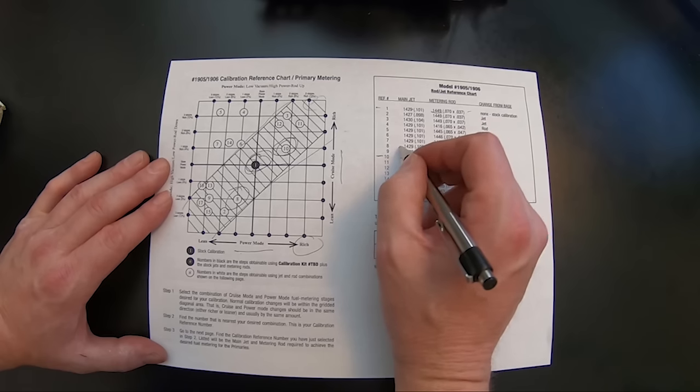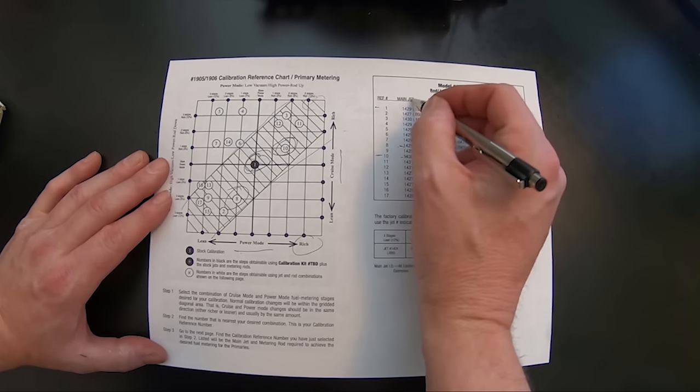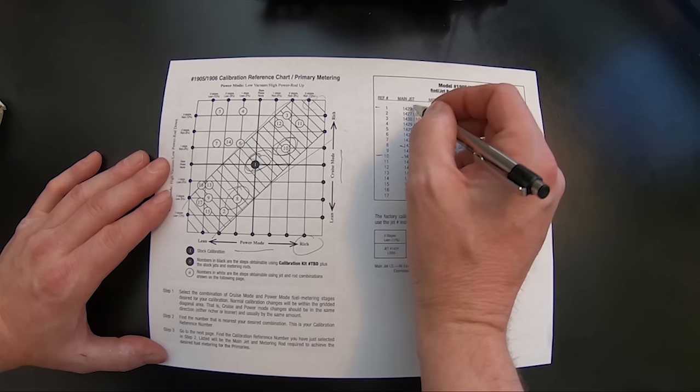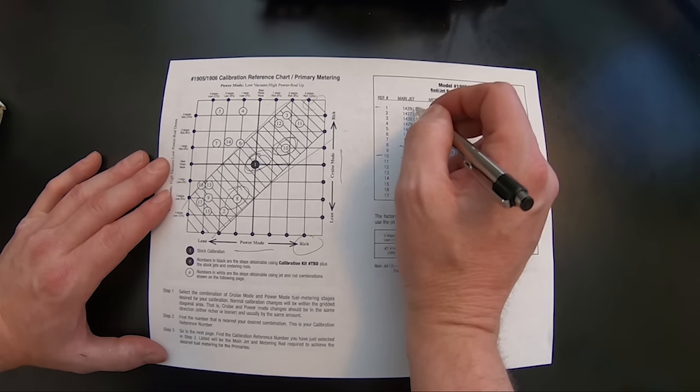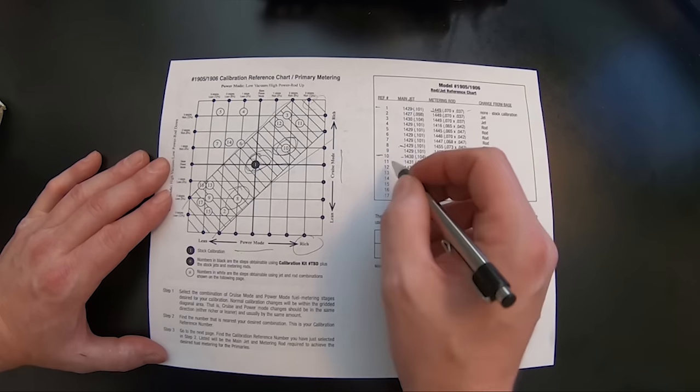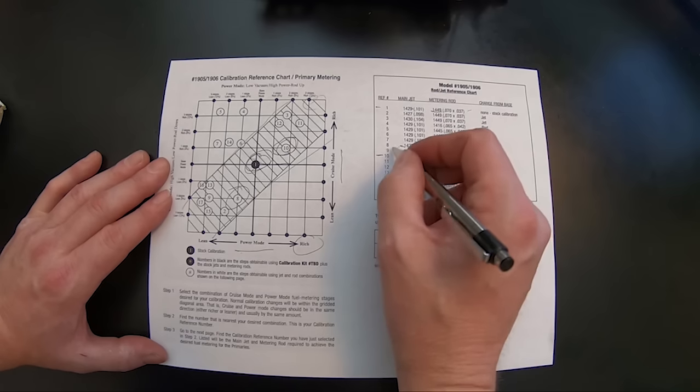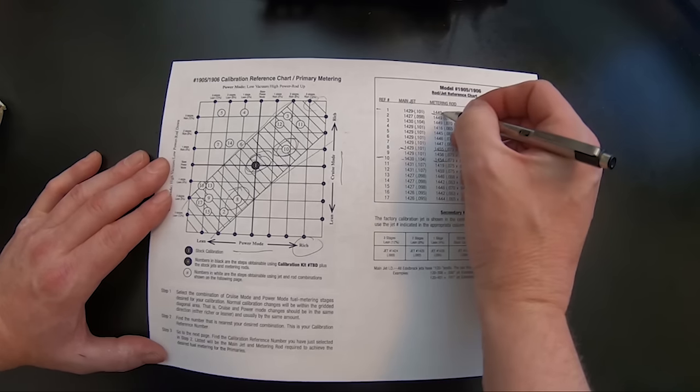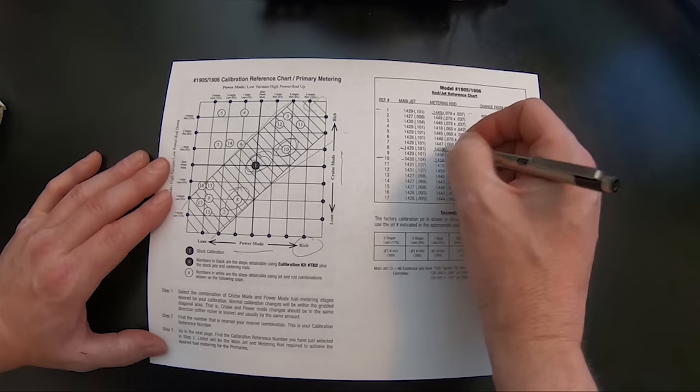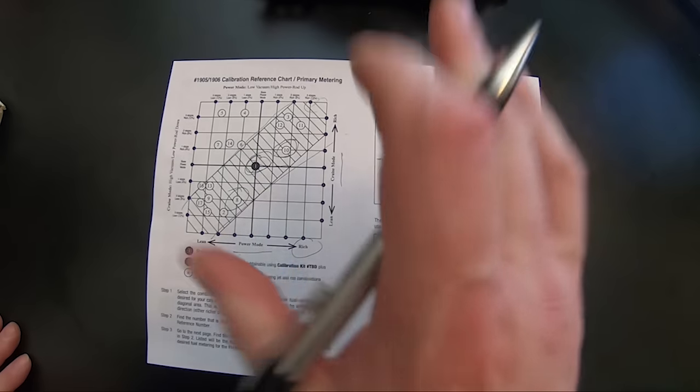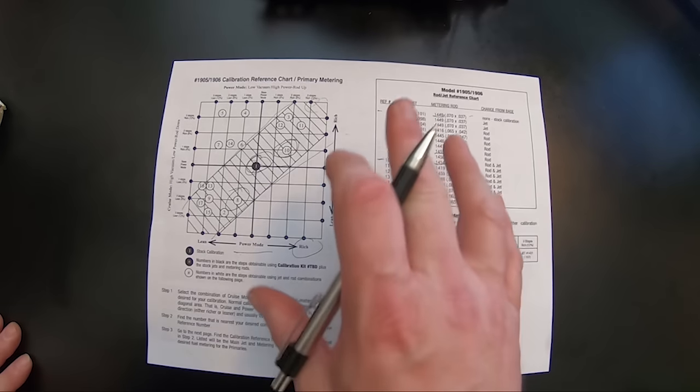In this case, it's a 1429. Hey, look, from the base setting, 1429, hey, that already comes with the jet. You don't need to make a jet change. It's going to be a rod change on this one from a 1449 part number to a 1455. Make small adjustments when you're using this chart.